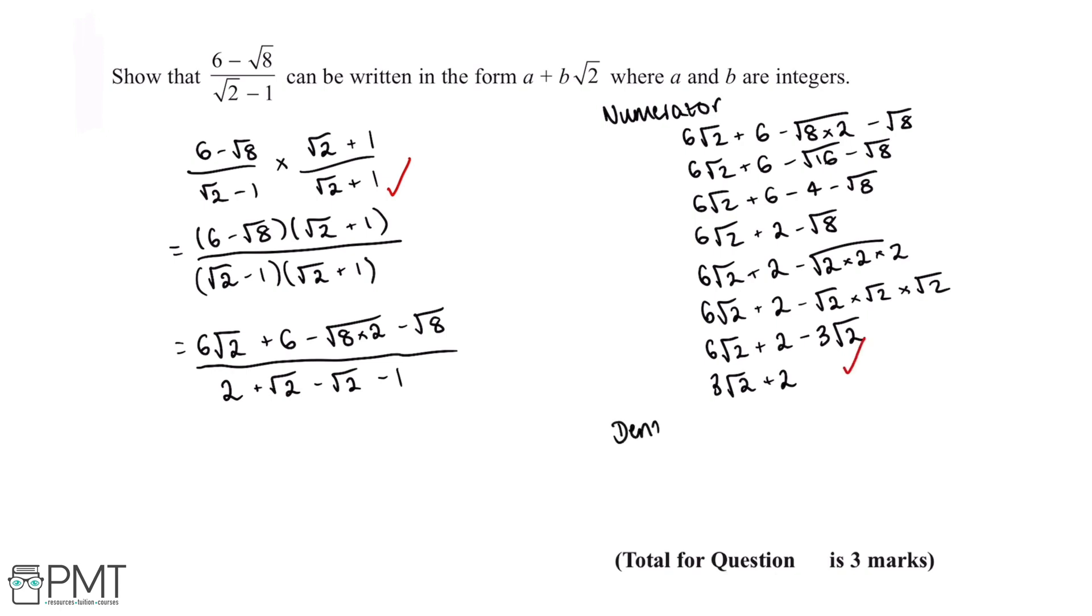And now the final thing we need to deal with is this denominator. So the first thing we can do is cancel out this √2 because we've got √2 minus √2, and this will give us 0. So this leaves us with 2 - 1, which will just give us 1.